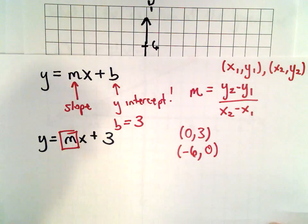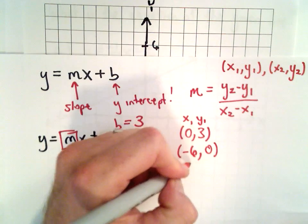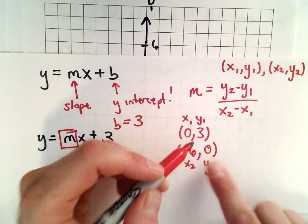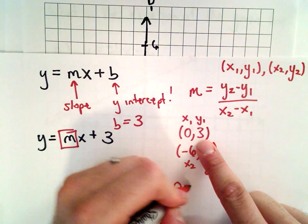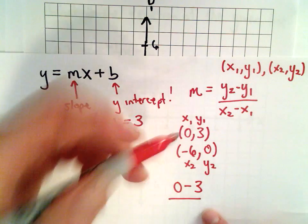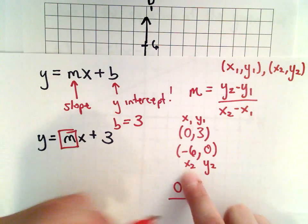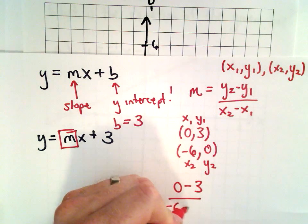So those are my two points. I can think about this as being x1, y1, x2, y2. So using my formula, I'm going to have 0 minus 3. So that's my y2 minus y1. And then x2 minus x1, that's going to be negative 6 minus 0.